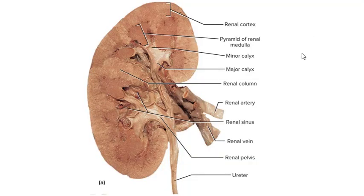The renal artery branches off into the interlobar arteries, which branch into the arcuate arteries, which branch into the cortical radiate arteries, and eventually into the afferent arterioles that lead into each nephron.